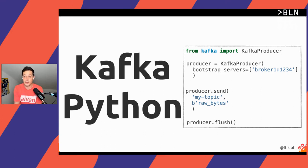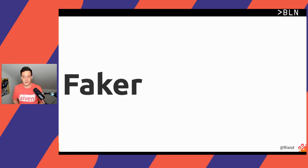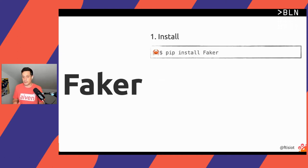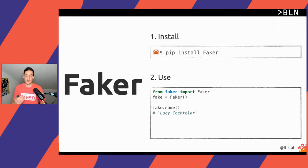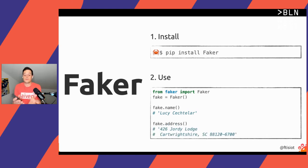Let me introduce you to Faker. Faker is a Python library that allows us to create fake data. All we need to do is install it with pip install Faker, then start using it — we create an instance of Faker. Now if we need a fake name, we just call the name method, and you get something like 'Lucy' — a nice fake name. If we need a fake address, we call the address method and we get a nice address.